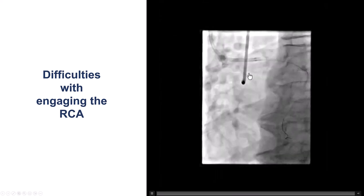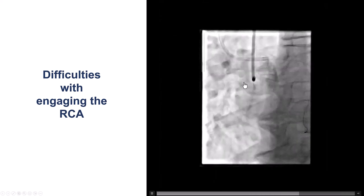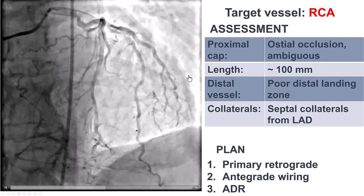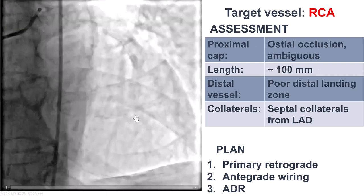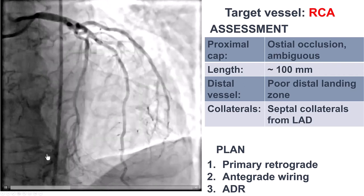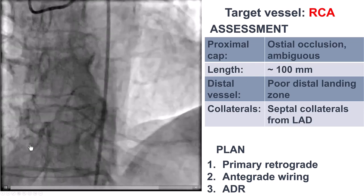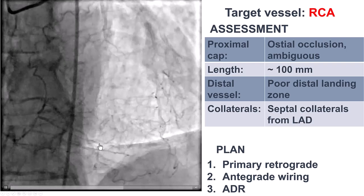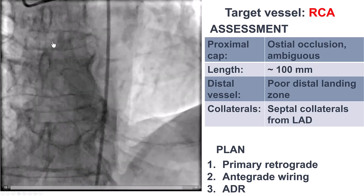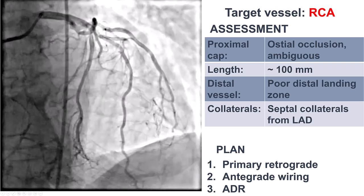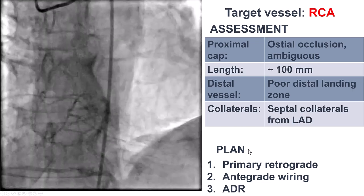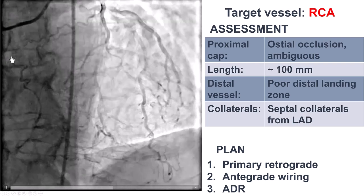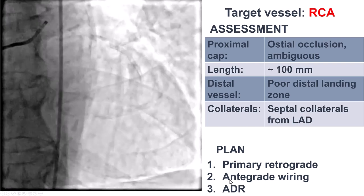The right coronary artery could not be engaged; it appeared to be occluded at the ostium. So here we have a patient with RCA CTO with an ostial occlusion. The length is long, essentially all the way from the ostium to the distal bifurcation of the PDA and PLV. There was diffuse disease in the distal vessel and septal collaterals from the LAD. In these cases of aorto-ostial CTOs, typically a primary retrograde approach is done. If we're able to get through with the retrograde, one can use the retrograde wire as a marker for advancing antegrade equipment.